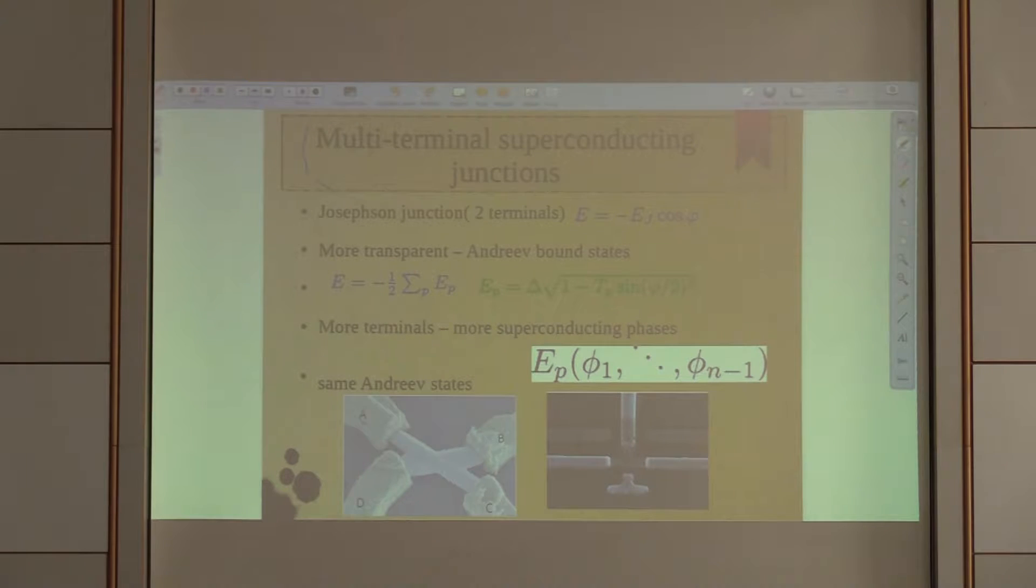In this case we have energy which depends on phase difference between two superconducting electrodes, just cosine phi. If one goes from tunnel barriers to more transparent structures, if one uses scattering theory methods and thinks about transparencies of different channels, one gets an interesting result: each channel gives rise to a bound state, a so-called Andreev state.